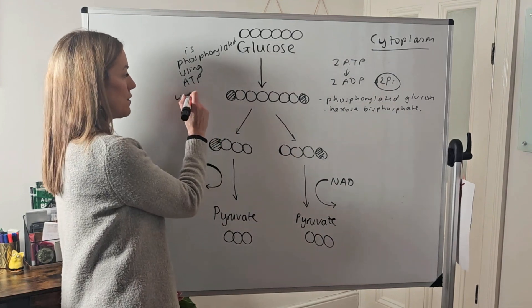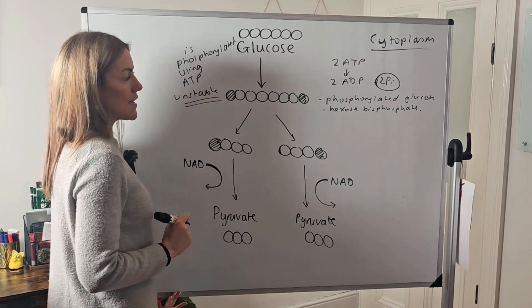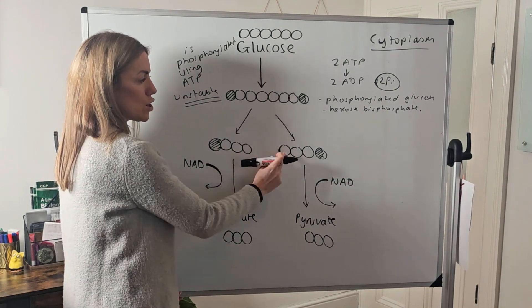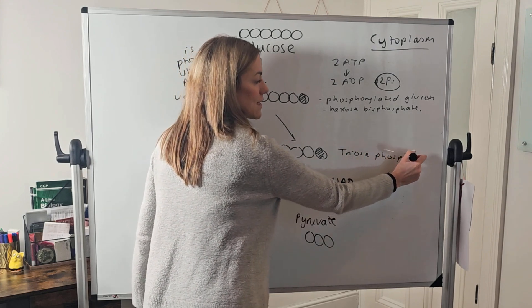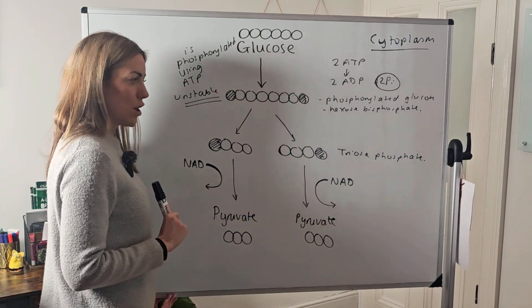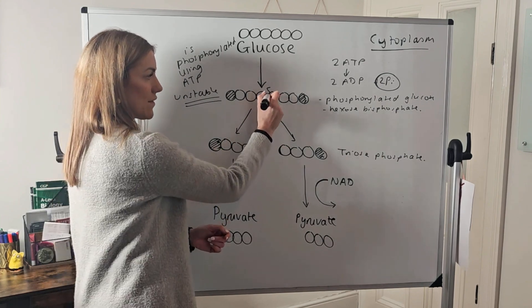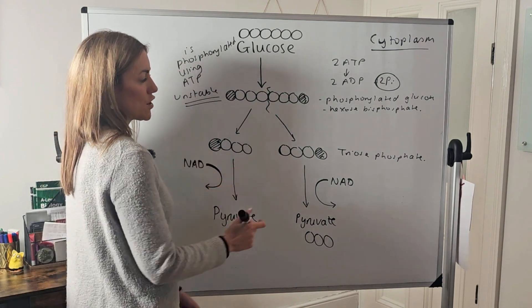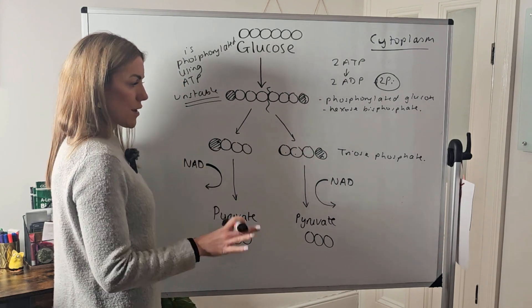Because we phosphorylated the glucose, it's now really unstable, so the phosphorylated glucose breaks down immediately into two molecules of triose phosphate. We need to be able to name this molecule. Each triose phosphate has three carbons and a phosphate group.